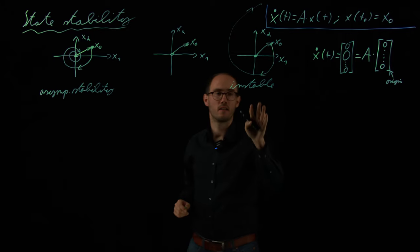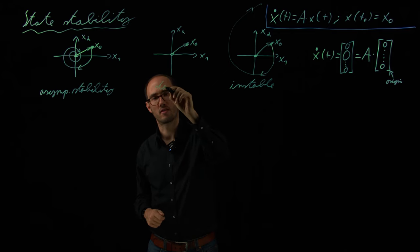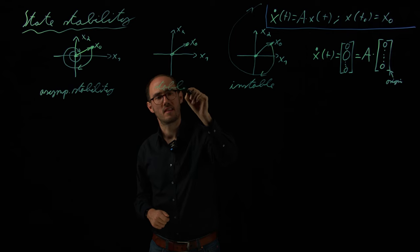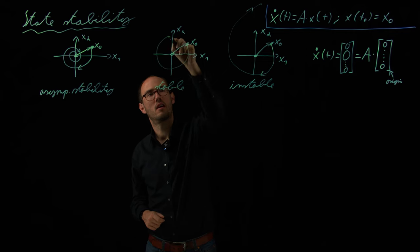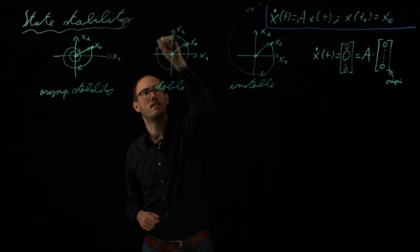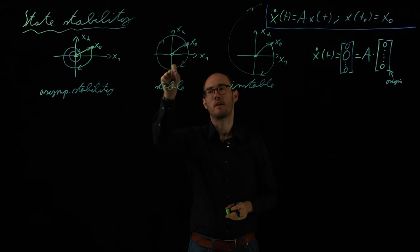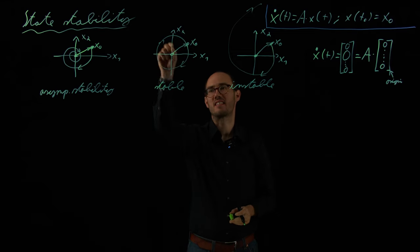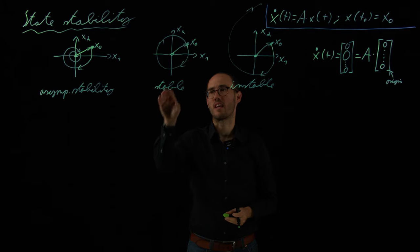In between instability and asymptotic stability, we would have the simple stability, or just stable, in that sense that if I let it loose, for example, like this, that the system response, here in an oscillatory behavior, is bounded, is limited, but we would not see that it's going back to the origin. So the asymptotic behavior in that sense that this origin is attracted, the state response is not given. So that would be the simple stability, but not the asymptotic stability.